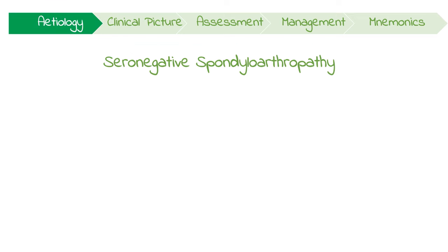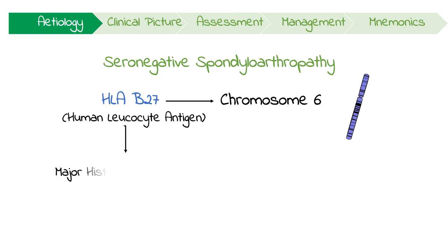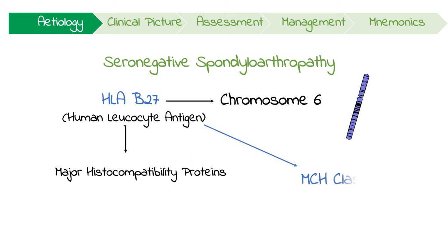All the PAIR diseases are strongly associated with the gene HLA-B27 on chromosome 6. HLA stands for human leukocyte antigen, which is a complex of genes that encodes for major histocompatibility proteins, or MHC proteins. We have two main classes of these molecules and HLA-B27 encodes for a specific type of MHC class 1 protein. Although we're not entirely sure why, this is thought to be the cause of these autoimmunities.